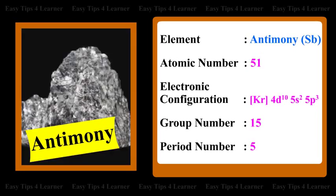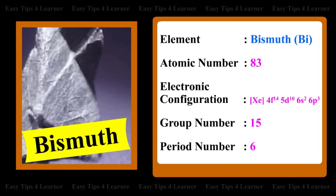For the element antimony, the atomic number is 51. For bismuth, the electronic configuration is [Xe]4f¹⁴5d¹⁰6s²6p³. The group number is 15 and the period number is 6.